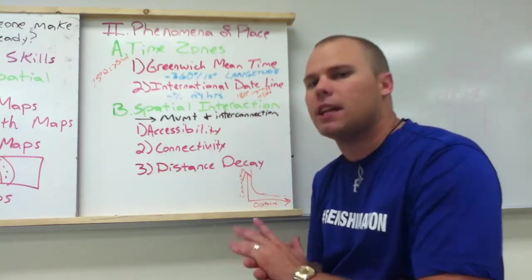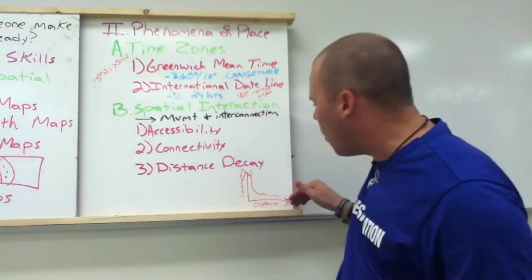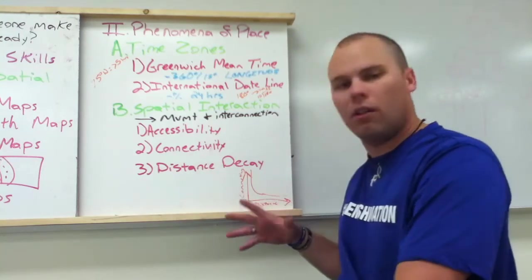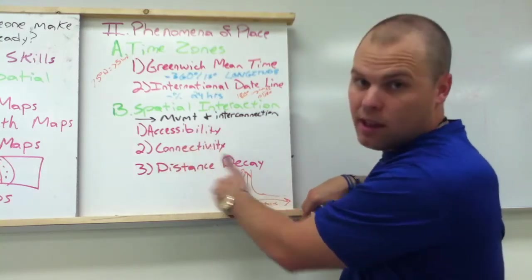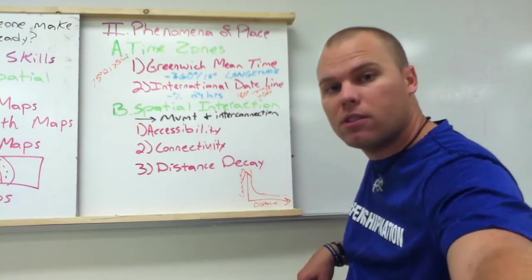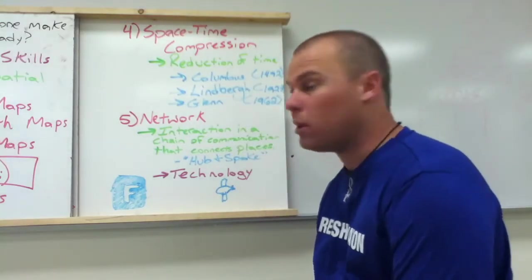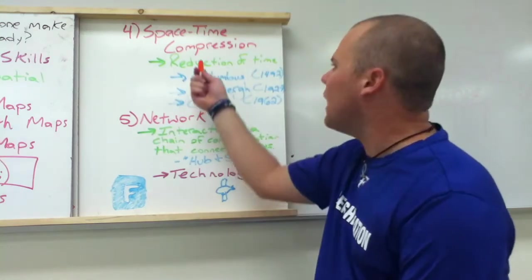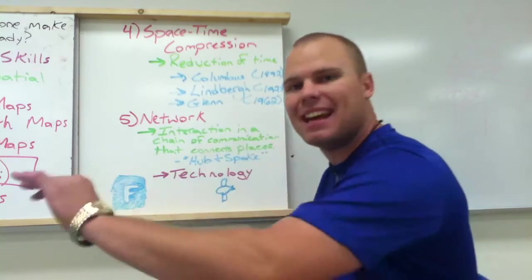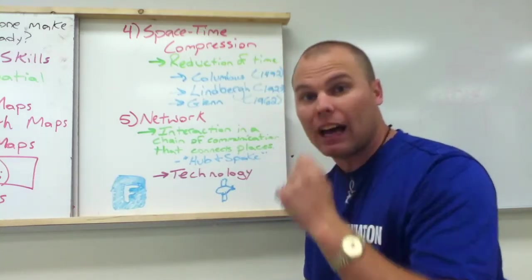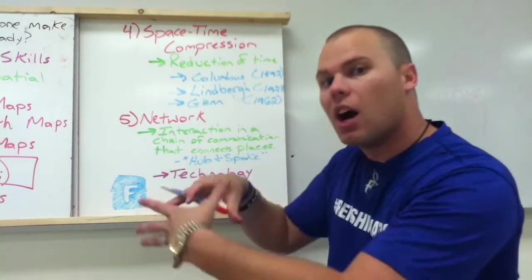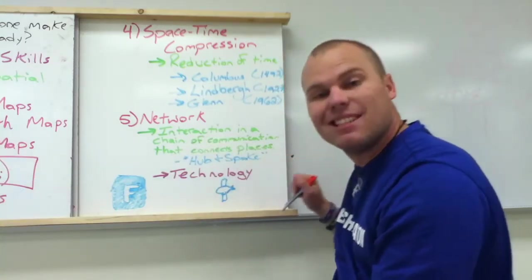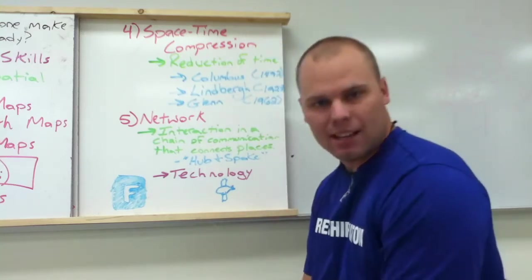This is also known as the friction of distance — the idea that the further away you go, the fewer people will travel to get there. The friction of distance refers to the amount of time it takes to get from one place to another, and that friction increases or decreases how many people will move to that area. What plays into effect here is technology, called space-time compression — because of technology, there is a reduction in the time it takes to get somewhere, and with that, the distance decay formula is not as severe.